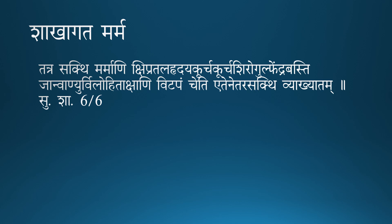The Marmas which are present in the limbs are known as Shakhagata Marmas, which are present in the Shakhas — either upper limb as well as lower limb. There are 11 in number per limb, so 11 into 4 equals 44. Total Shakhagata Marmas are 44 in number.